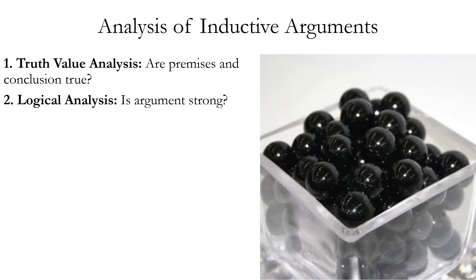As with deductive arguments, there are two types of analysis of inductive arguments. Truth value analysis asks: are the premises and conclusion actually true? Logical analysis asks: is the argument logically strong? These are separate questions. Strong arguments can have a false premise or a false conclusion, and arguments with true premises and a true conclusion can be logically weak. Remember that truth only applies to an individual proposition. Logical strength applies to a whole argument, so it's incorrect to say a premise is strong or weak, and incorrect to say an argument is true or false.